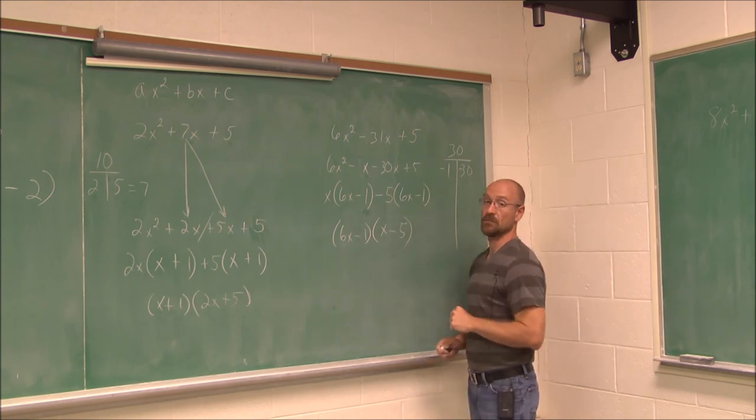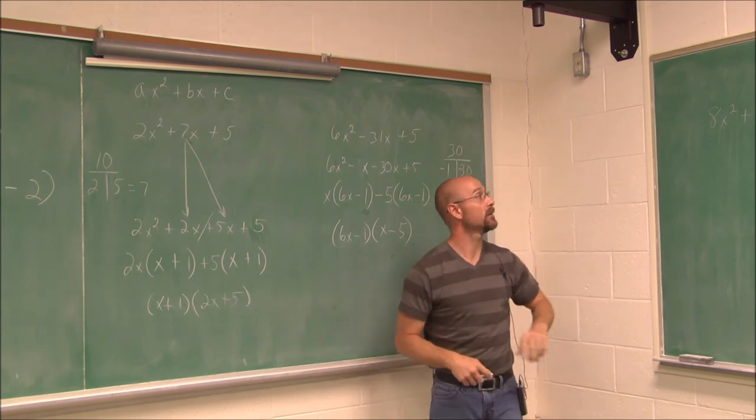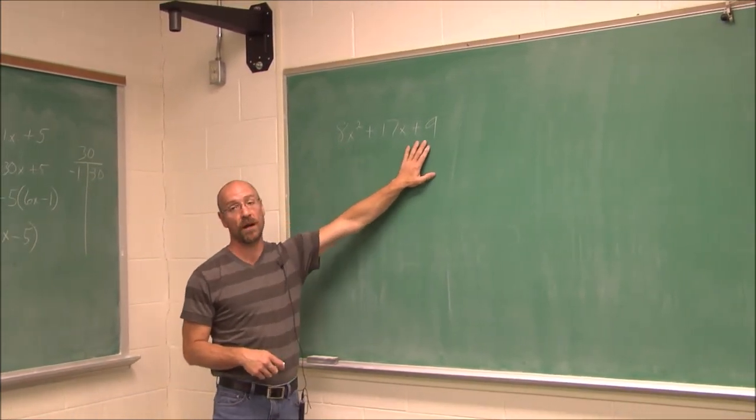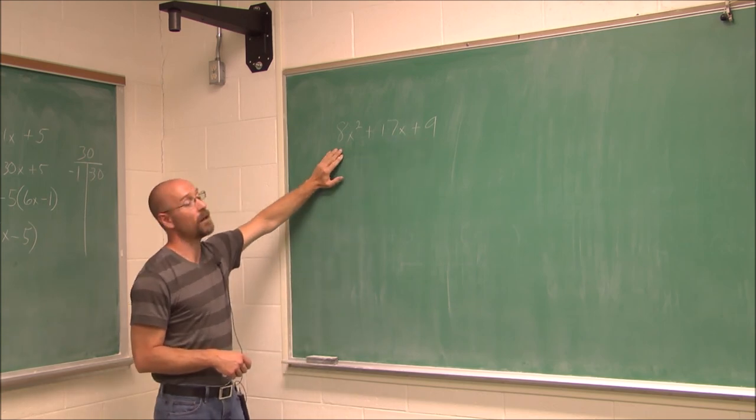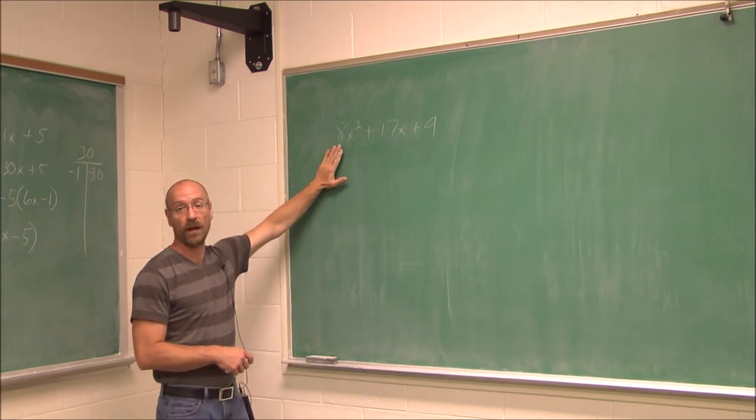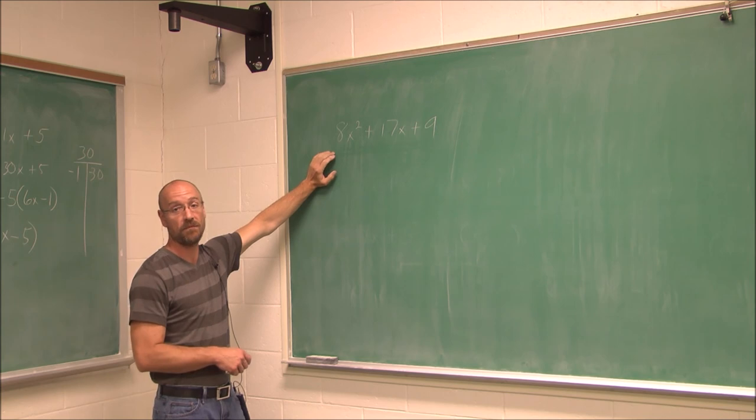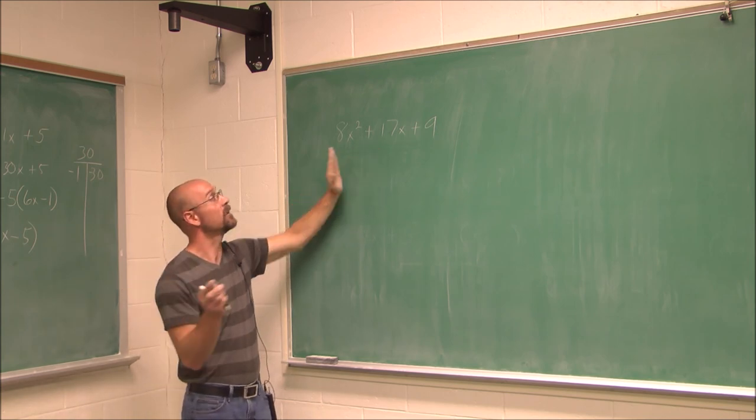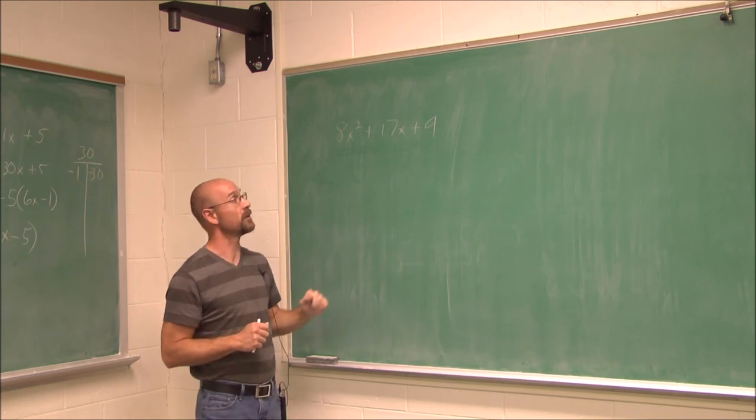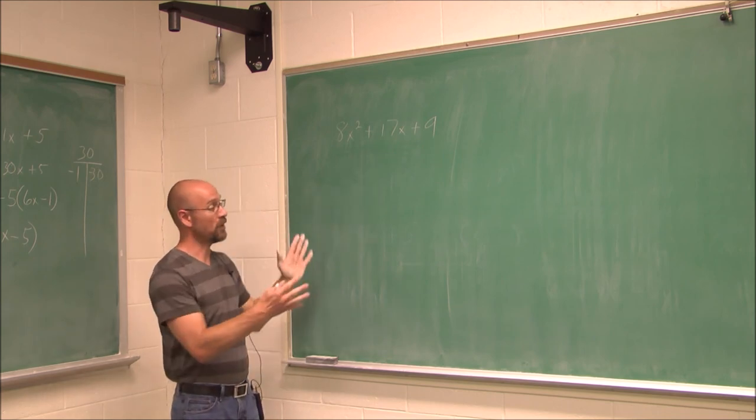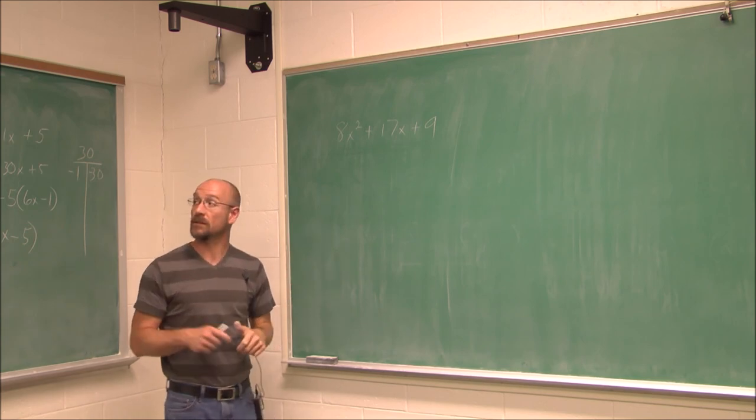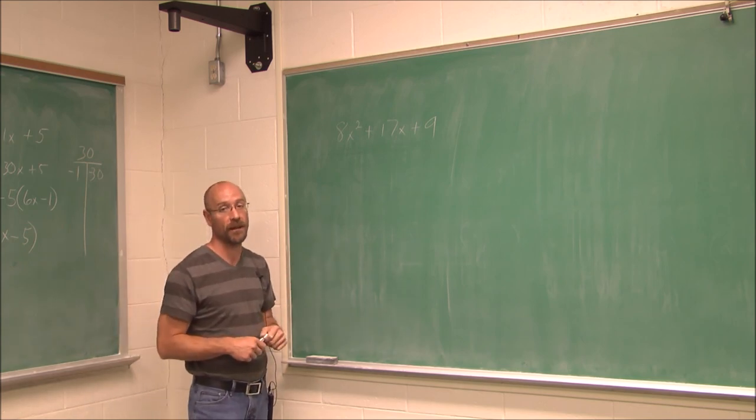So let's go back to this problem right here. This was the very first problem we did. And what I want you to do, instead of using trial and error, attempt the AC method to find the factors of this. You already know the answer, but apply the AC method to this. Try it on your own. Make sure you FOIL it to get back to this, just to check your work. So this has been section 7.8. Thank you for watching.